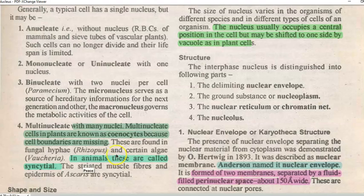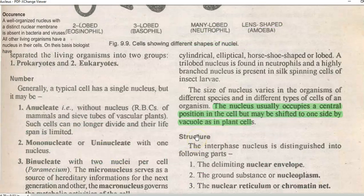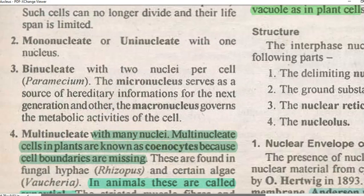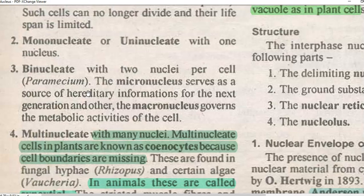Mononucleus is the condition in which a single nucleus is present. Binucleus is the condition in which two nuclei are present per cell. An example of a binucleate condition is Paramecium, which has two nuclei — one is a micronucleus and another is a macronucleus. The micronucleus serves as a source of hereditary information carried to the next generation, whereas the macronucleus governs the total metabolic activities of the cell.